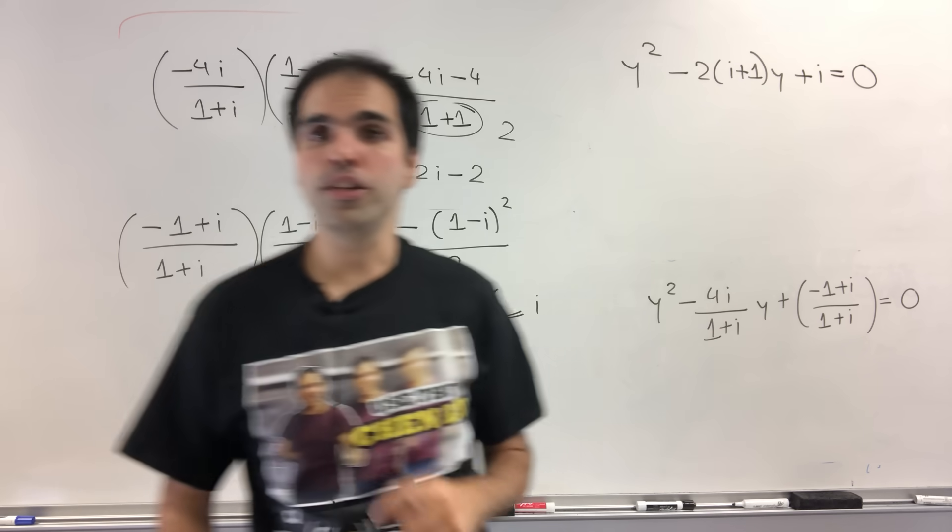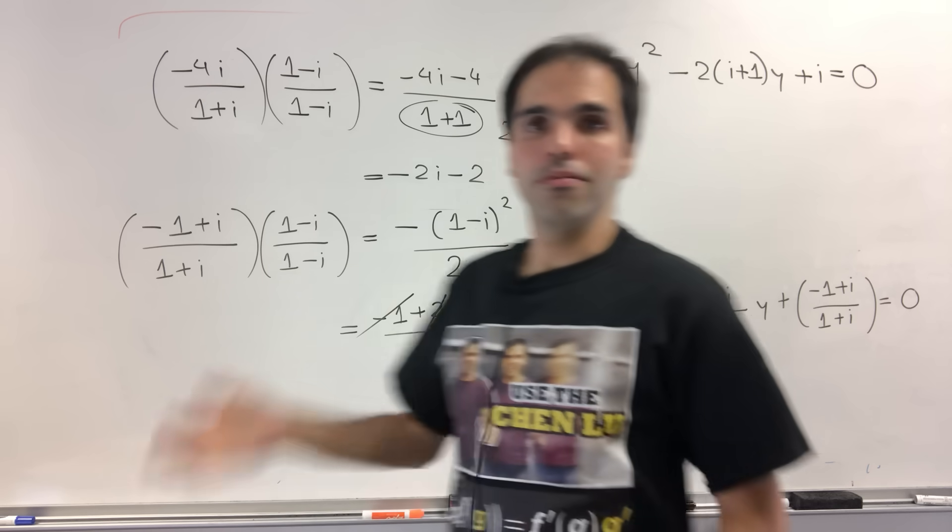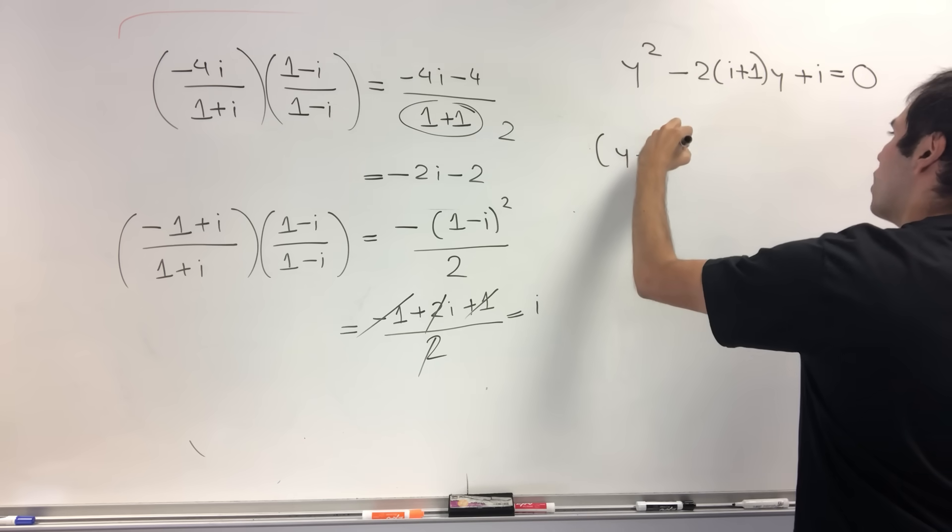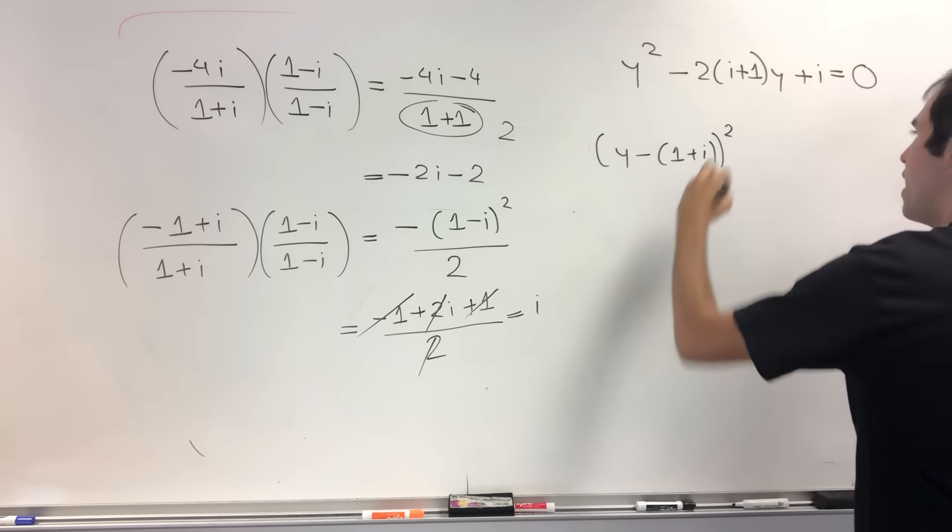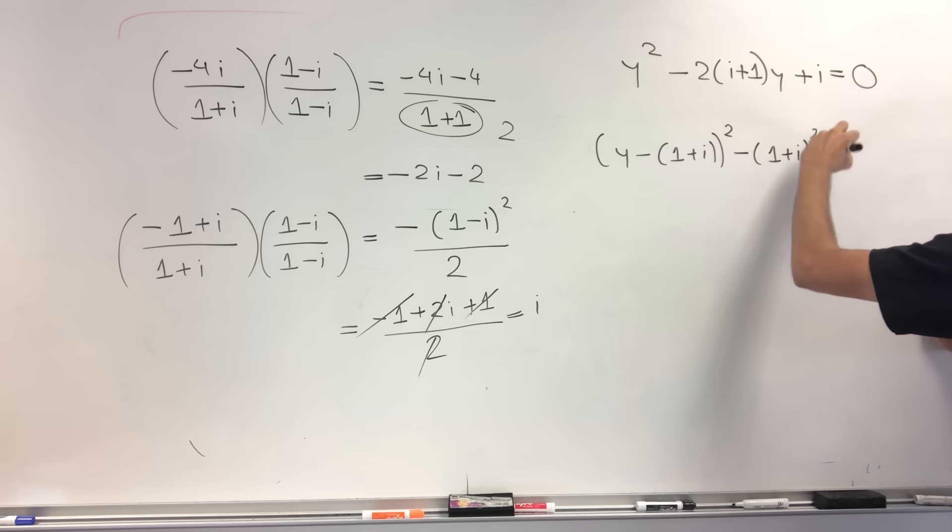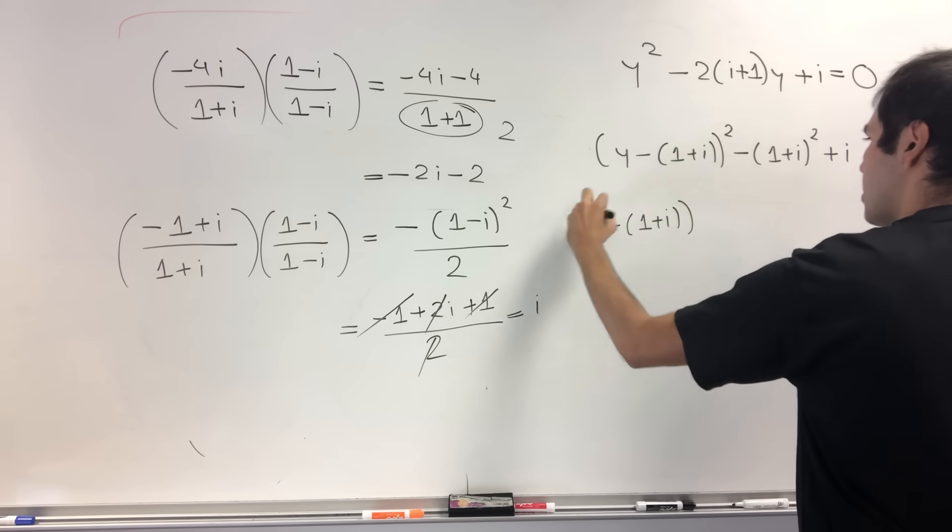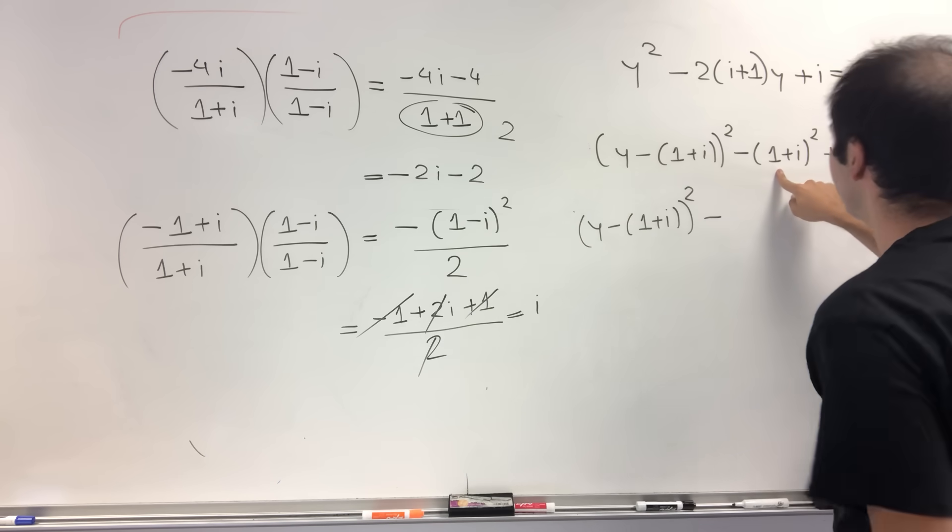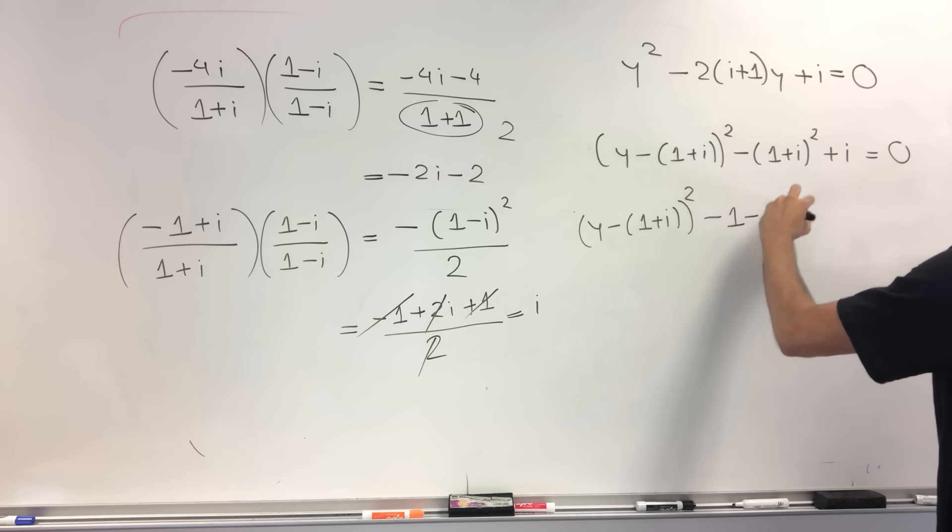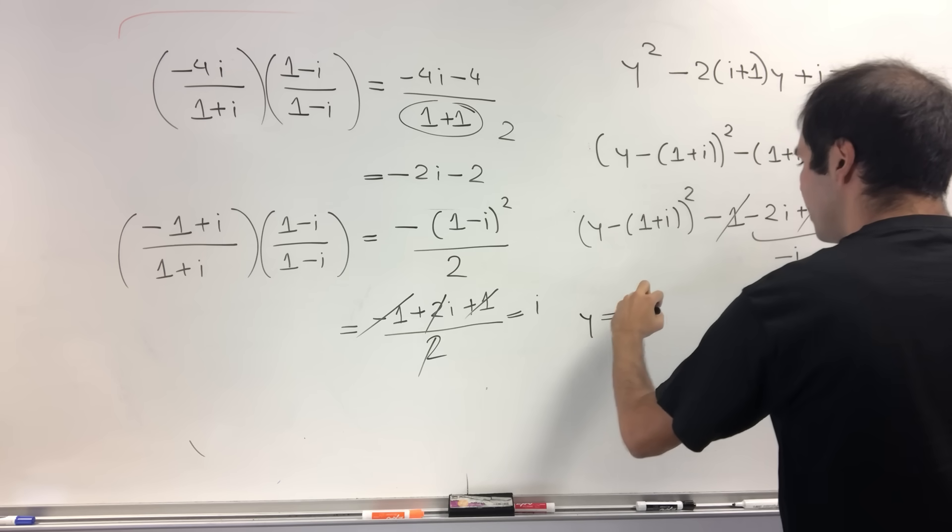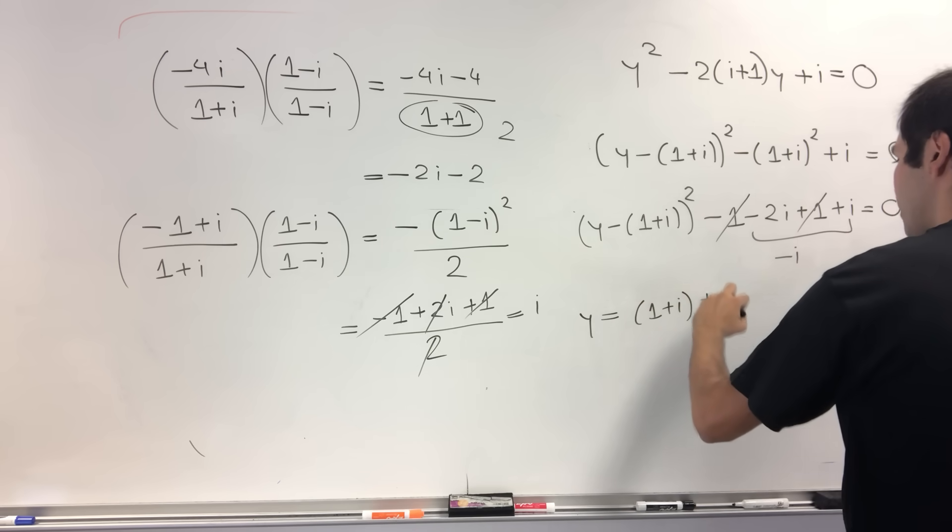You could use a quadratic formula here, but it's actually easier just to complete the square. So in the end, this gives you (y - (1 + i))² - (1 + i)² + i equals 0. So (y - (1 + i))² minus, so we actually expanded this, something similar out. So it's -1 - 2i, and then i², which is -1, with this extra minus becomes +1. And then +i equals 0. The 1s cancel out, and this becomes -i.